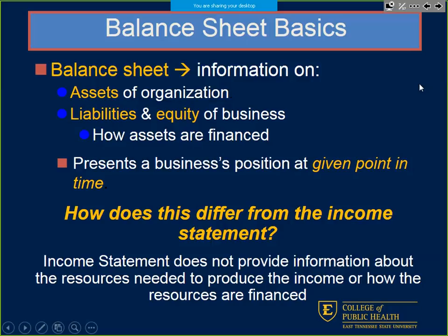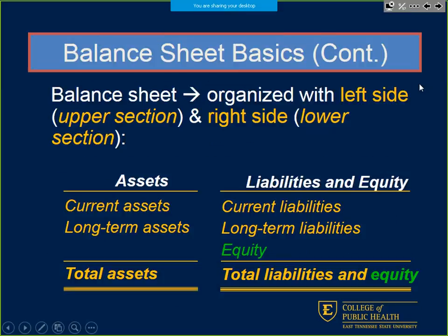They're all interconnected. The balance sheet is organized upper and lower sections, but sometimes you'll see it laid out landscape, left to right. You should always see assets first — current and long-term — giving total assets. Then liabilities and equity, with current and long-term liabilities, and then equity, giving total liabilities and equity.